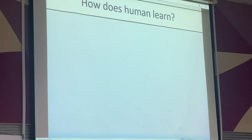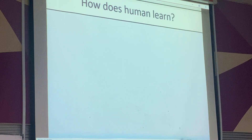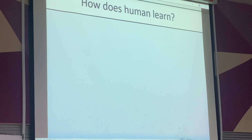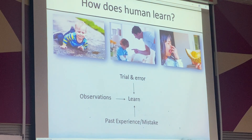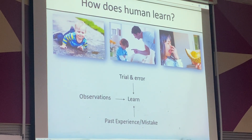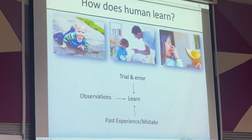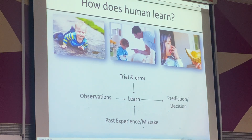To understand machine learning, you first have to understand how human learning works — because how human learning reflects machine learning. Machine learning learns through observations, through trying and errors, through past experience and mistakes. Through these errors, observations, experience, and mistakes, we review ourselves and can make better decisions.